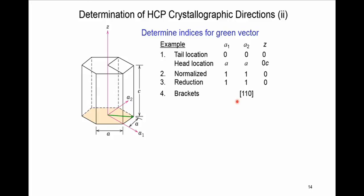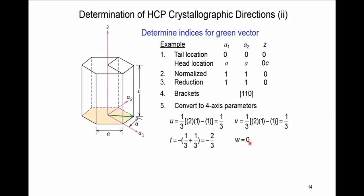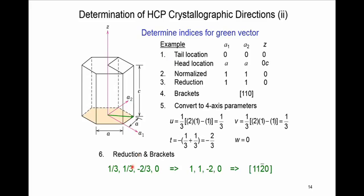The next step is to find u, v, t, and w using the conversion relation. Plugging in u prime = 1, v prime = 1, w prime = 0 gives us 1/3, 1/3, -2/3, and 0. For reduction, we exclude 0 and find the smallest absolute value, which is 1/3. Multiplying everything by 3 gives 1, 1, -2, and 0. Enclosing these in a bracket gives our HCP crystallographic direction.